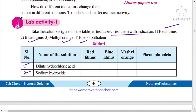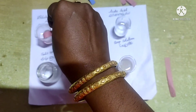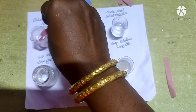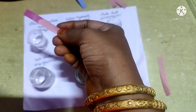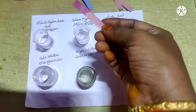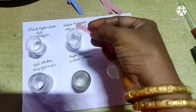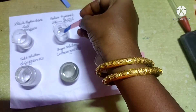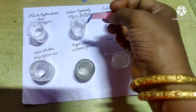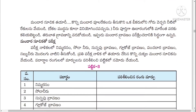First of all, we will conduct the activity with the red litmus paper. Take a red litmus paper and dip it in the dilute hydrochloric acid and observe the color — there is no change. Then take red litmus paper and insert it into the sodium hydroxide solution; it will turn blue. If the red litmus paper changes to blue color, it indicates that the given solution is a base solution.